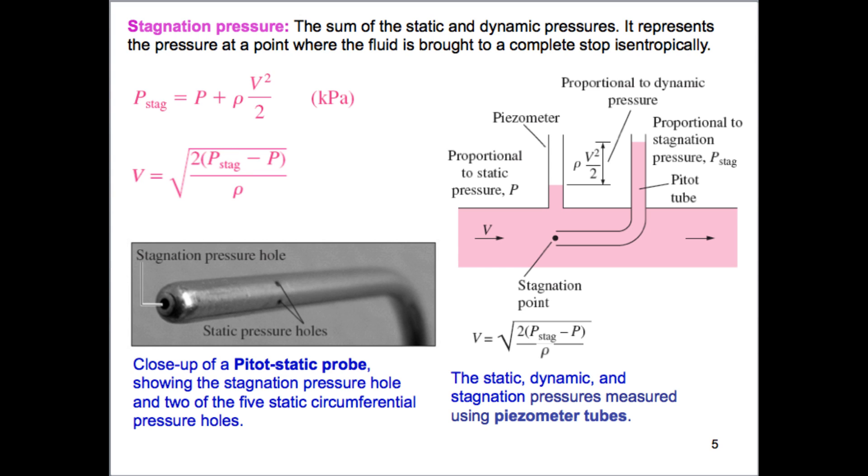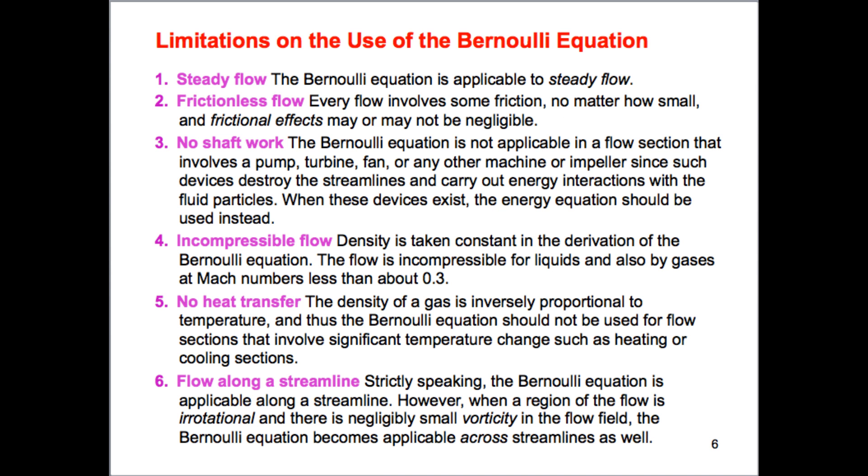If we know the stagnation pressure or the difference between the stagnation pressure and the static pressure, and we know the density of the fluid, we can determine the velocity of the flow. That can be very useful in determining the velocity of a flow. You know if you have flow of air or water it's invisible, we can't see what the velocity is. But if we stick a probe like this, a simple probe, we can determine what the velocity is and that really helps us validate theoretical models and develop new engineering things.